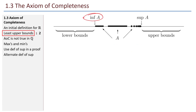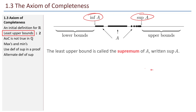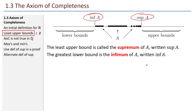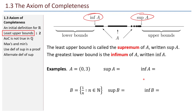The greatest lower bound and the least upper bound have special names. The least upper bound is called the supremum of A, written sup A. The greatest lower bound is the infimum of A, written inf A. Here are some examples. Consider these two sets, A and B, and take a couple of seconds to see if you can identify the supremum and infimum of each. Pause the video, take a few seconds, and when you're ready to check your work, start the video again.